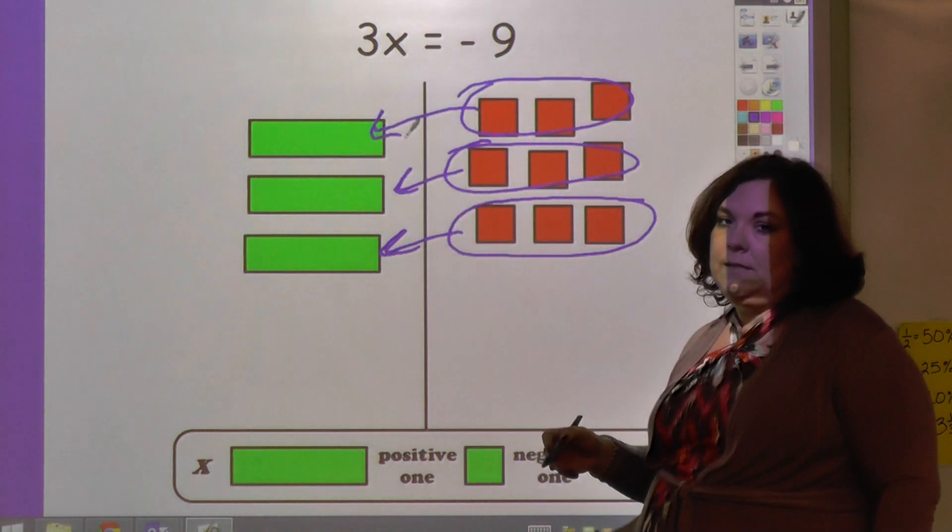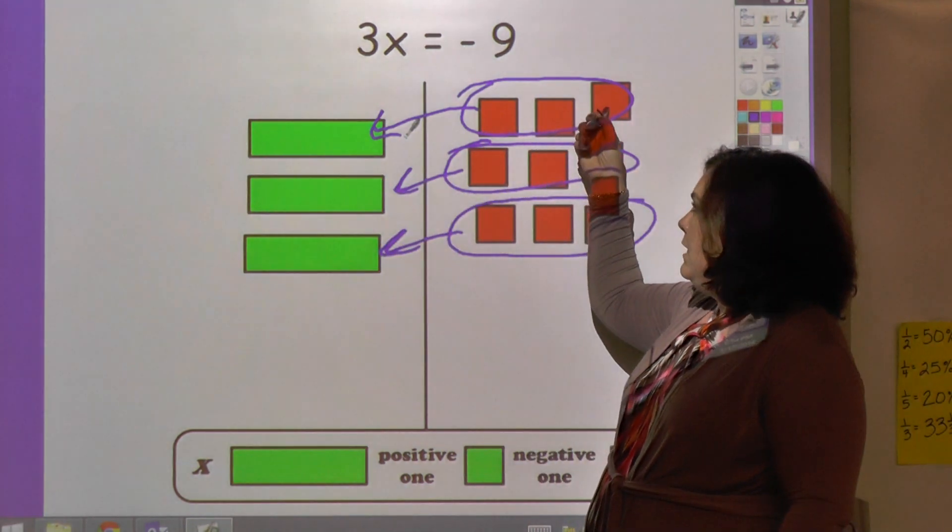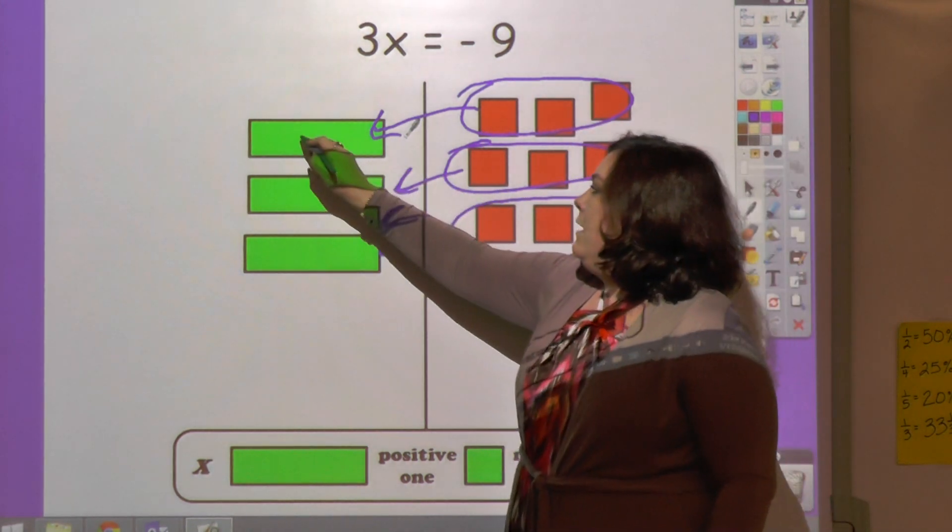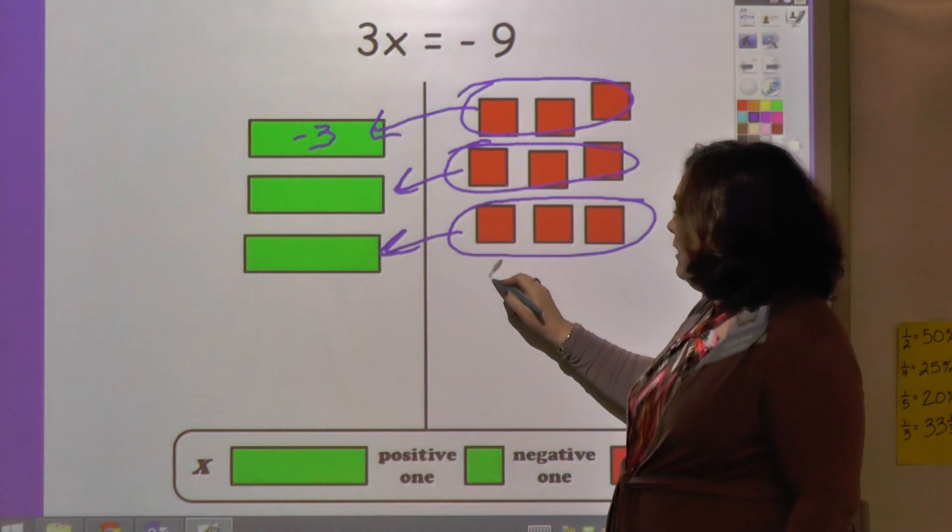So this is gonna go to this one, this is, and this is going to go to this one. So how many are represented by one green bar? It's 1, 2, 3, but negative. So negative 3 is what balances it out.